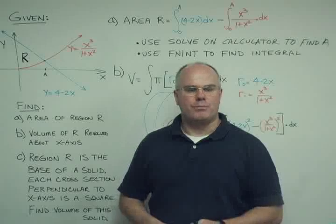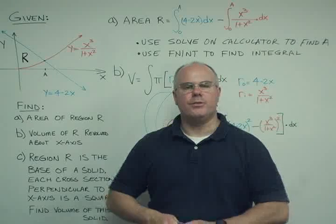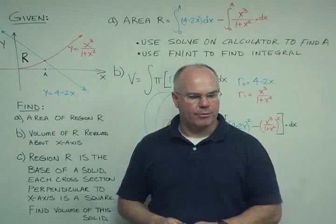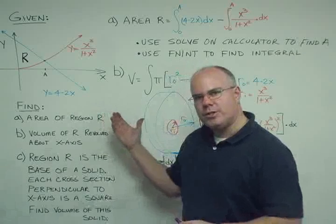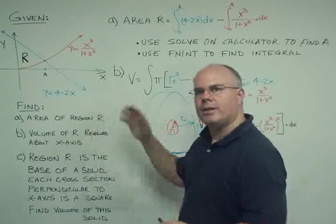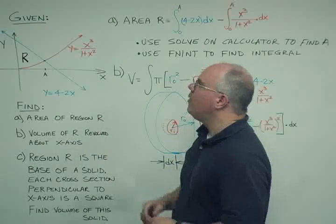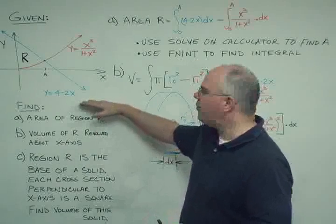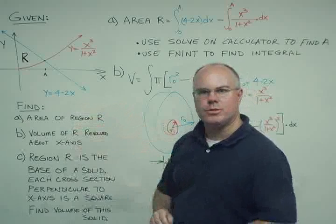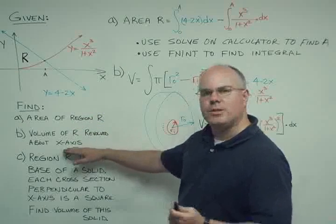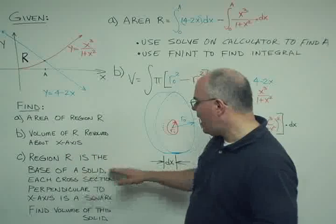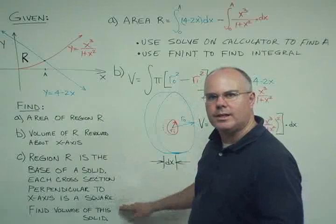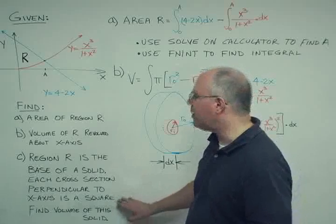Welcome back to Midnight Tutor. We've got a problem here from the 2002 AP exam for AB, the free response portion. This portion allows us to use a calculator and we're going to take advantage of that. We're asked to find areas and volumes, specifically volumes by two different methods. One is revolving about the x-axis and the other uses a different technique we'll explore in part C.